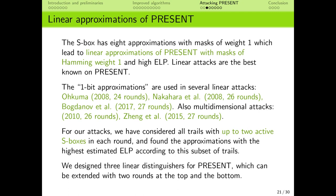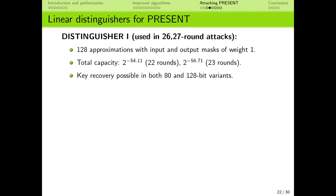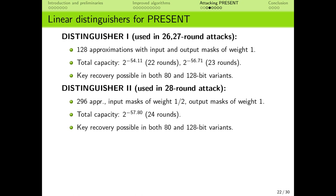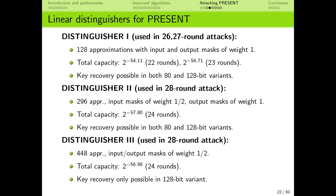More specifically, we have designed 3 different multiple linear distinguishers with different properties. For all these distinguishers, we consider a key recovery attack with 2 rounds at the beginning and 2 rounds at the end of the cipher. Distinguisher 1 is the most lightweight, with 128 linear approximations with masks of Hamming weight 1; it has the smallest capacity but also the smallest cost for key recovery, so we used it in our 26 and 27-round attacks. Distinguisher 2 has 296 approximations, some with input masks of Hamming weight 2, giving slightly larger capacity at manageable key recovery cost; we used this for the attack on 28-round PRESENT-80. Finally, Distinguisher 3 has the largest capacity with 448 approximations with masks of Hamming weight 1 or 2 in both input and output, but the most expensive key recovery, so it can only be used in the 128-bit key variant for an attack on 28-round PRESENT-128.